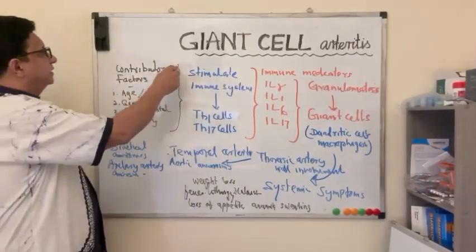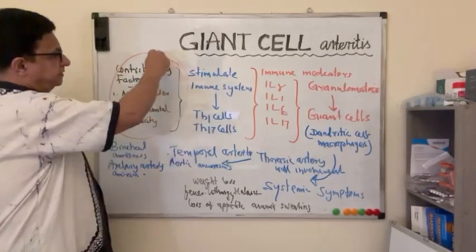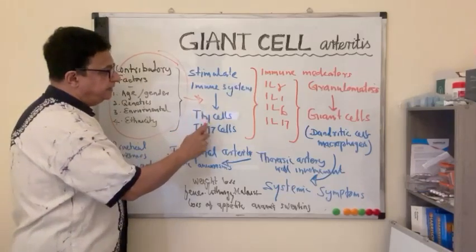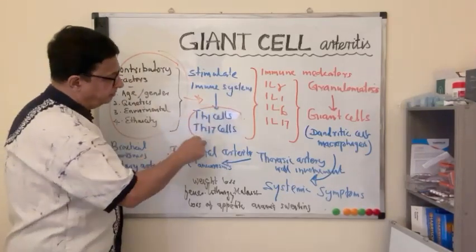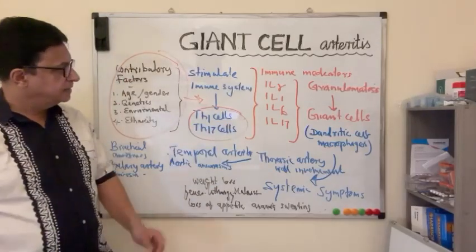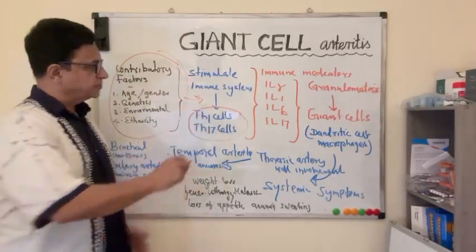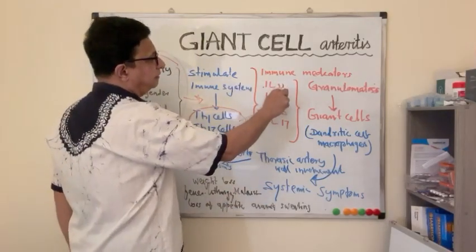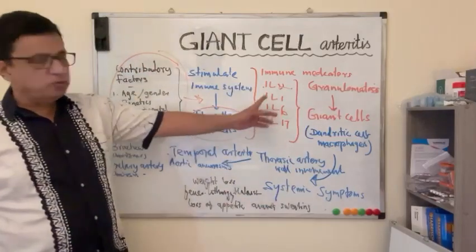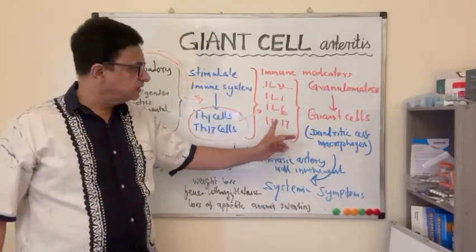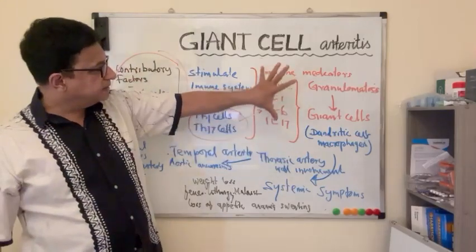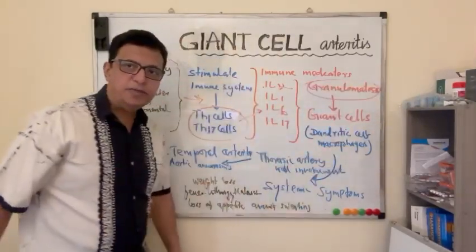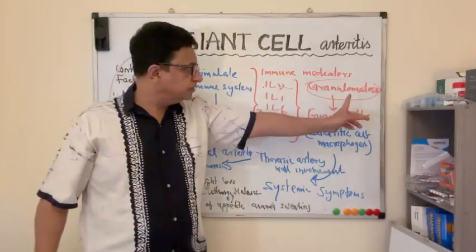As I explained, the contributory factors stimulate the immune system, especially T helper 1 cells and T helper 17 cells. This immune stimulation releases Interleukin-alpha, Interleukin-1, Interleukin-6, Interleukin-17, and these inflammatory mediators form granulomatosis in the major blood vessels of the thoracic cavity.